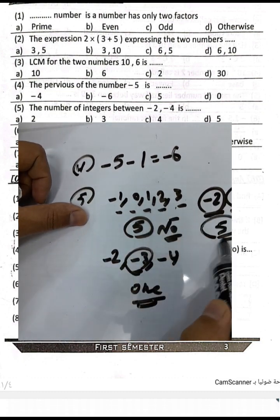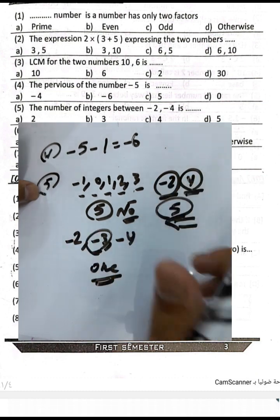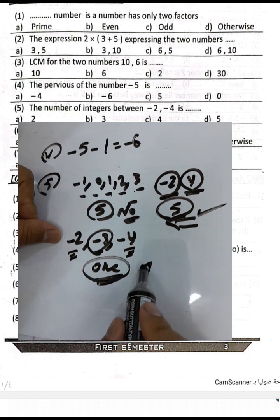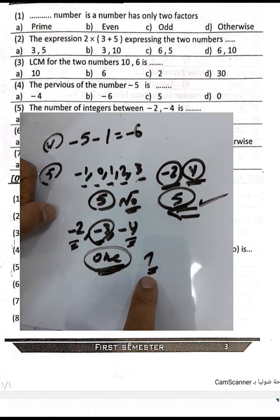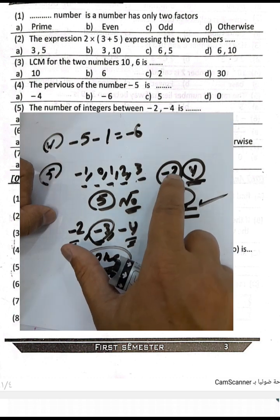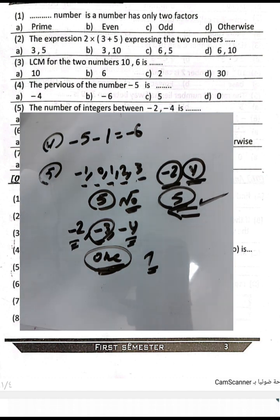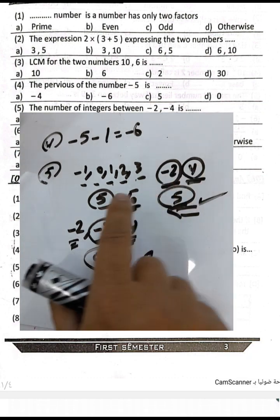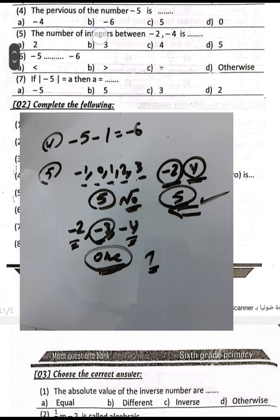The number of integers between negative two and negative four is one — only negative three. But between negative two and four, we have negative one, zero, one, two, three — that is five numbers. So if you want the integers between negative two and four the result is five, but between negative two and negative four the result is one.